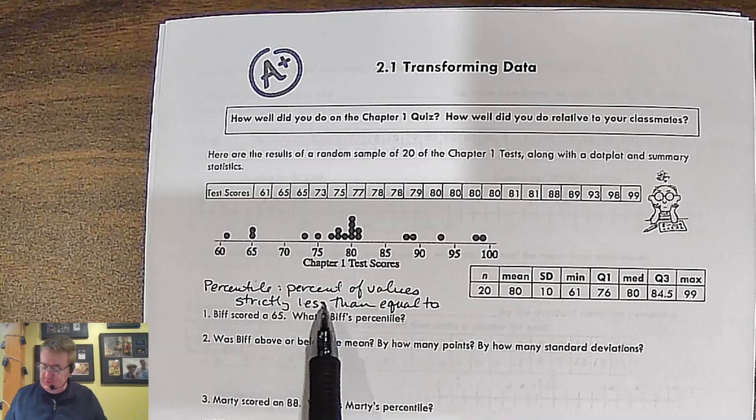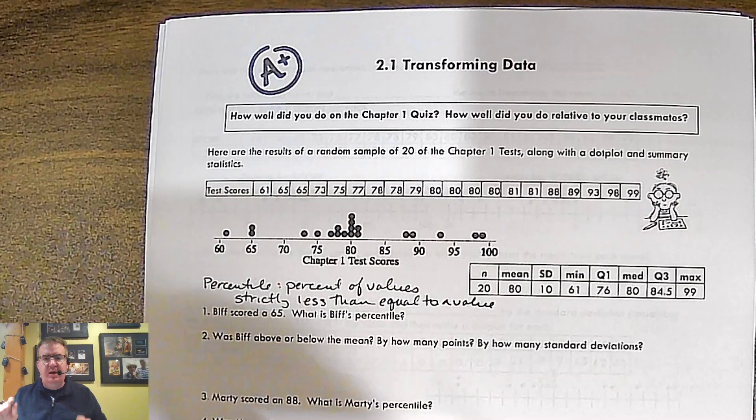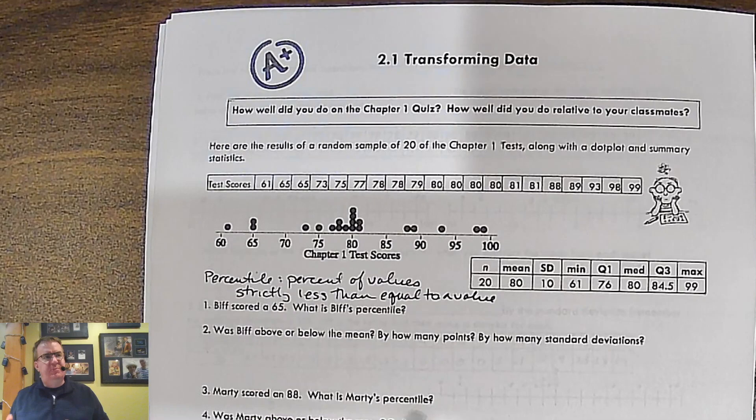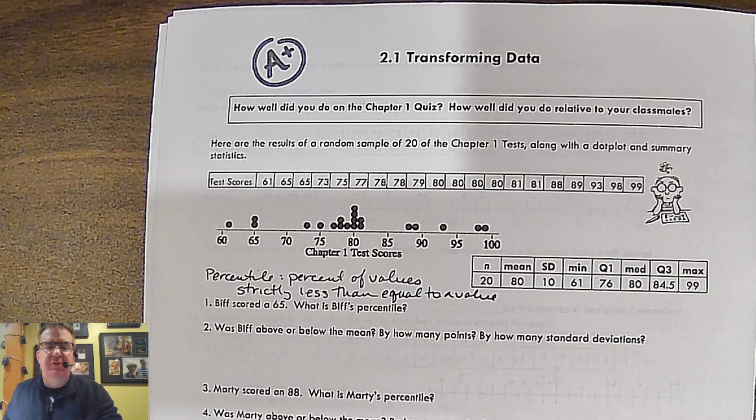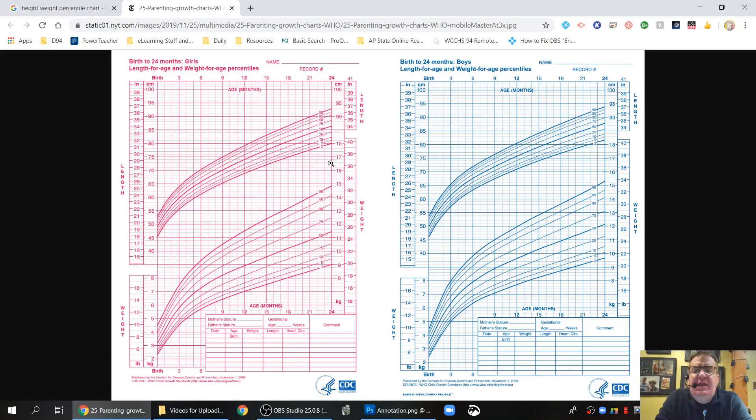A percentile is the percent of value strictly less than or equal to a value. So back in the day, PSAT scores used to be by percentiles. So you would say if you had a percentile of 80%, that means that your score beat or met 80% of the people who took the score. Another place where you can use it is this. Let me transition quick is here.